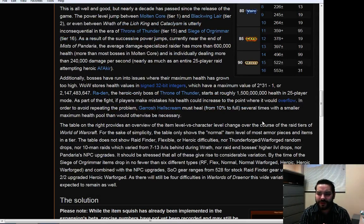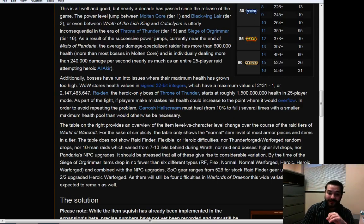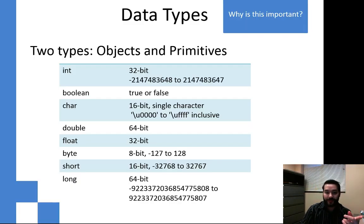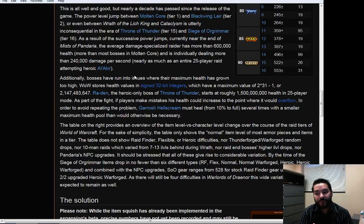Additionally, bosses have run into issues where their maximum health has gone too high. WoW stores health values in a signed 32-bit integer. We just talked about that inside of our PowerPoint slides. A 32-bit integer has a maximum of 2.14 billion. Ra Din, the heroic-only boss of Throne of Thunder, starts at roughly 5.1 billion in 25-person mode. As the fight progresses, if players don't know how to play and they're not in their zones and not killing the whelps...